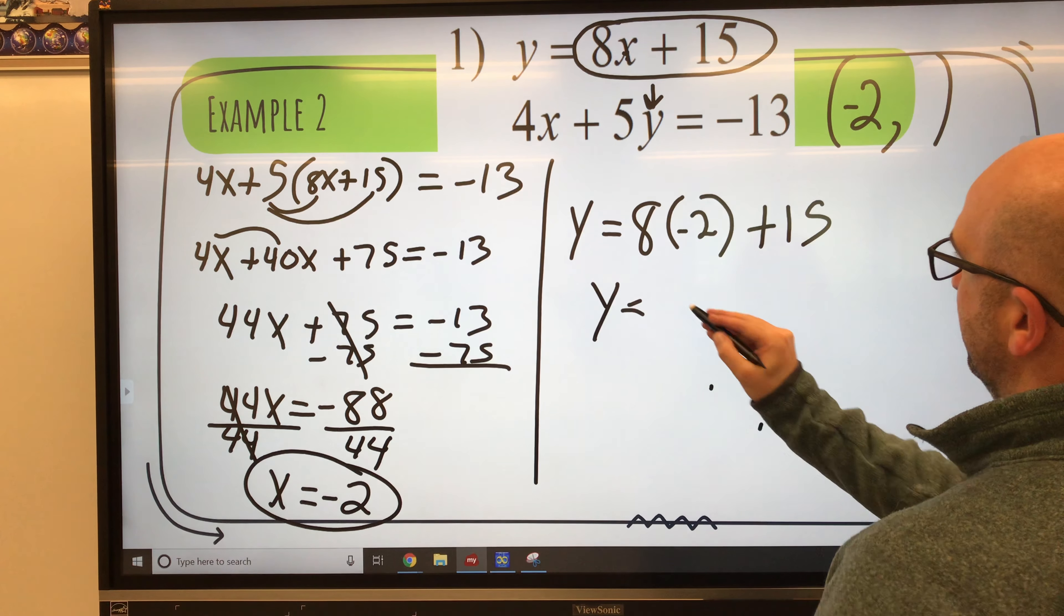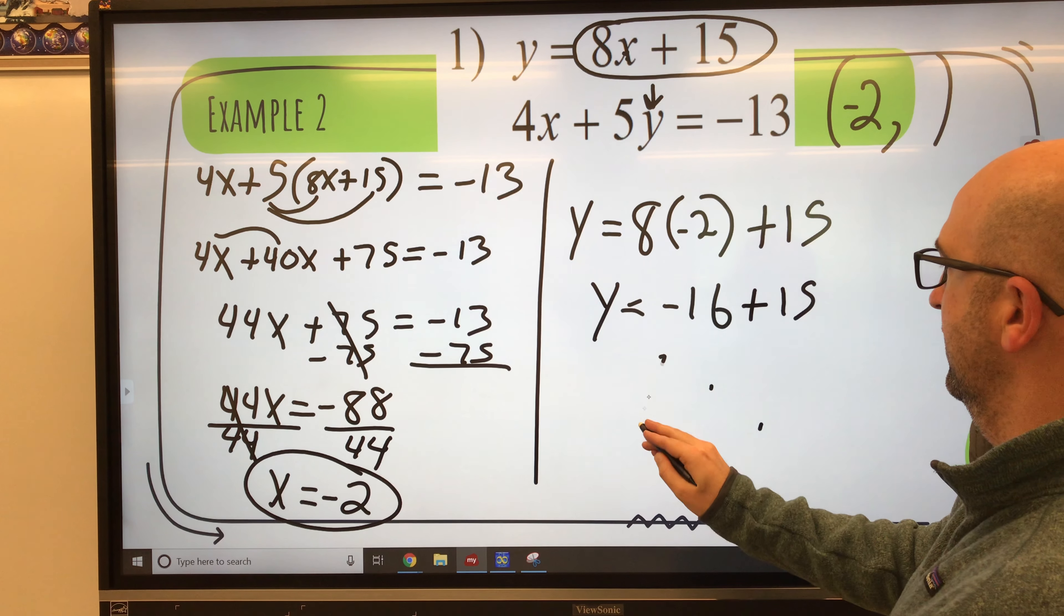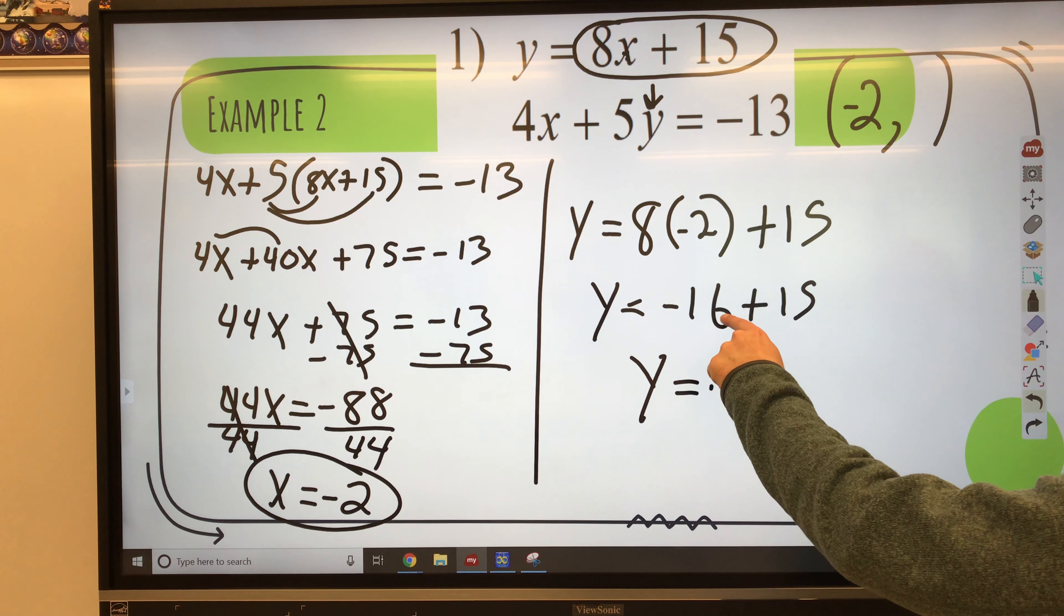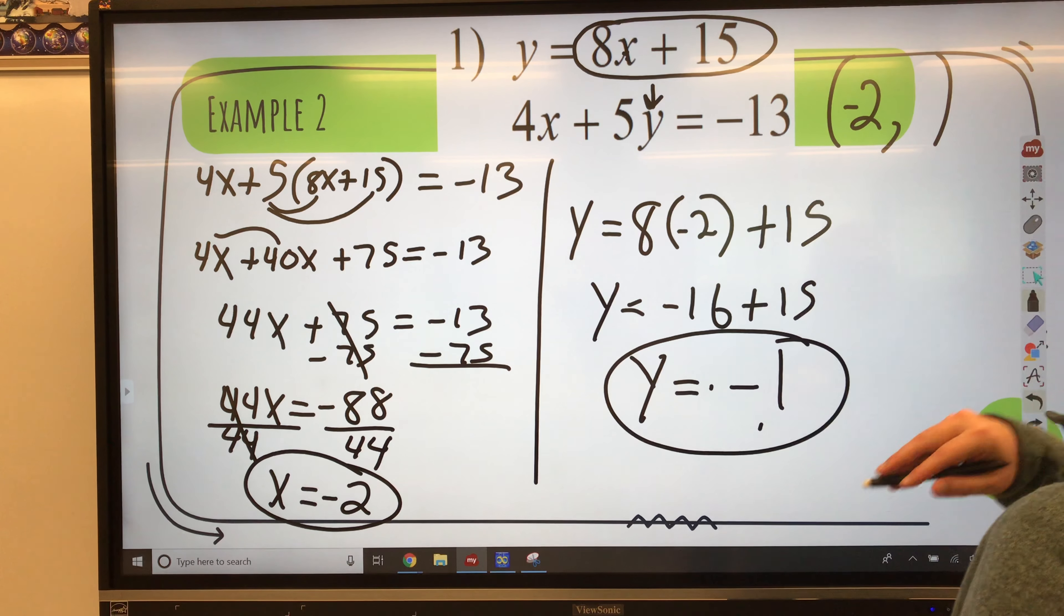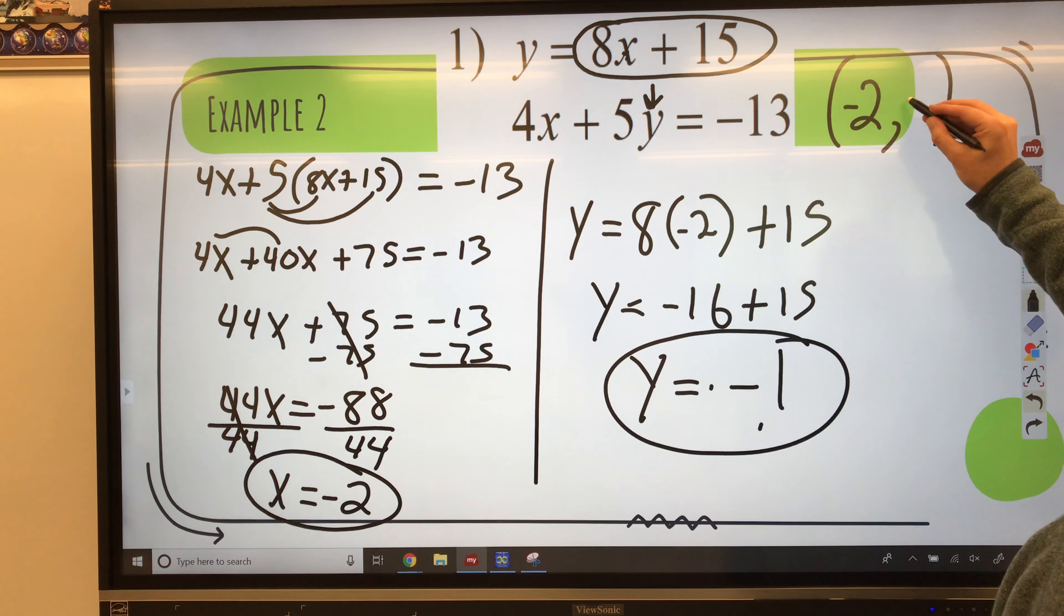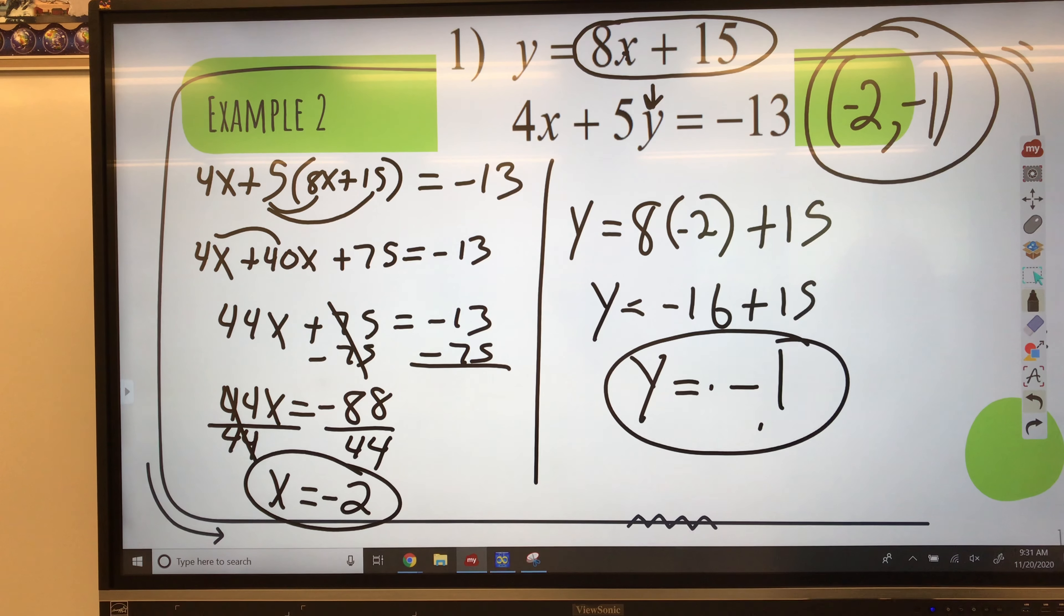8 times negative 2 is negative 16 plus 15. Y equals negative 16 plus 15 is negative 1. So negative 1 is my y. Which gives me a solution, then, of negative 2, negative 1 for my system of equations.